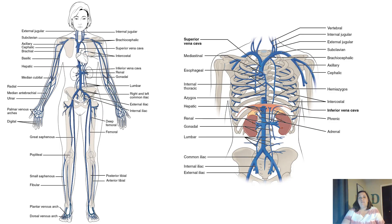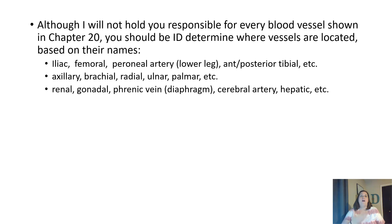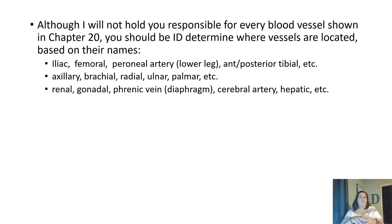Here's a look at what these veins look like. You don't need to learn every one, but you do need to identify certain ones based on location. Iliac, femoral, popliteal, and anterior and posterior tibial are in the leg. Axillary, brachial, radial, ulnar, and palmar are in the arm. Renal is kidney; gonadal are the gonads — testes or ovaries; phrenic is the diaphragm; cerebral is the brain; hepatic is the liver. Review the terminology from Anatomy 1 and see how it relates to these vessels.